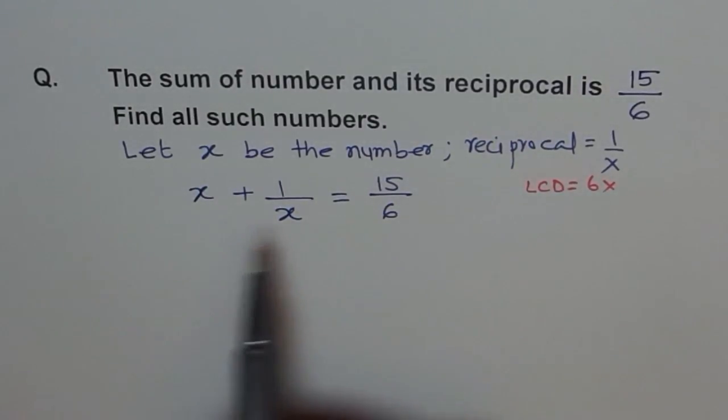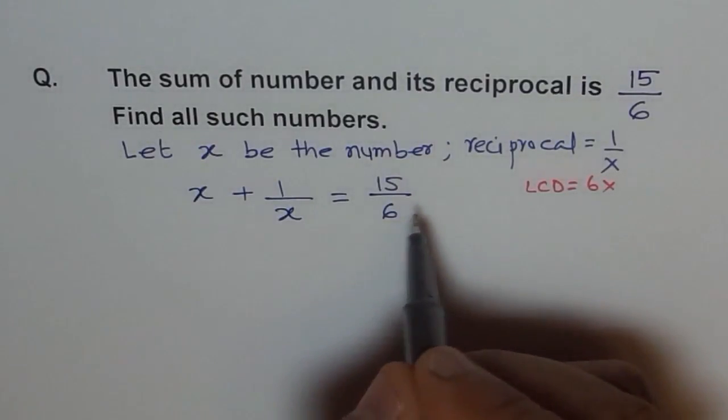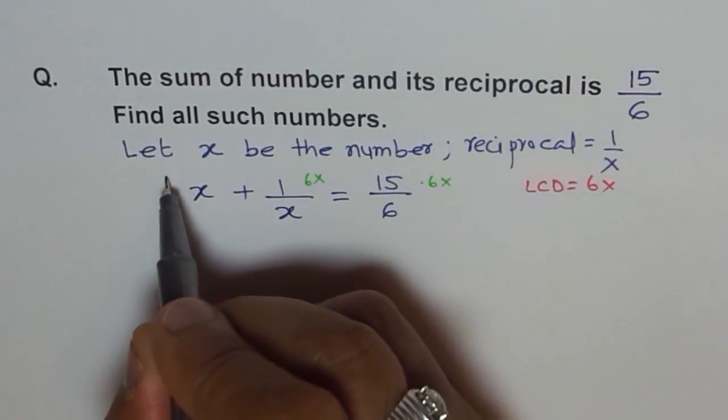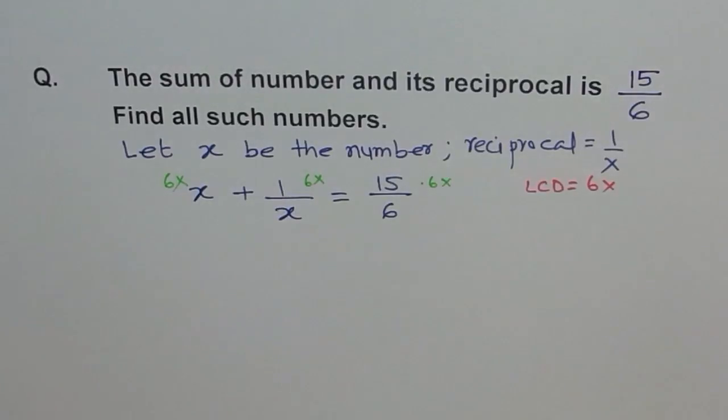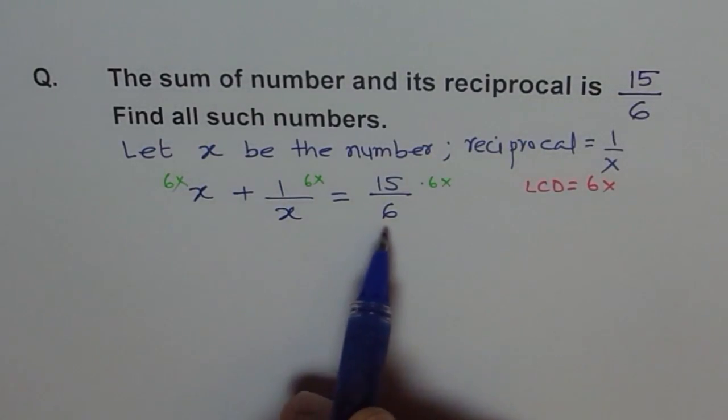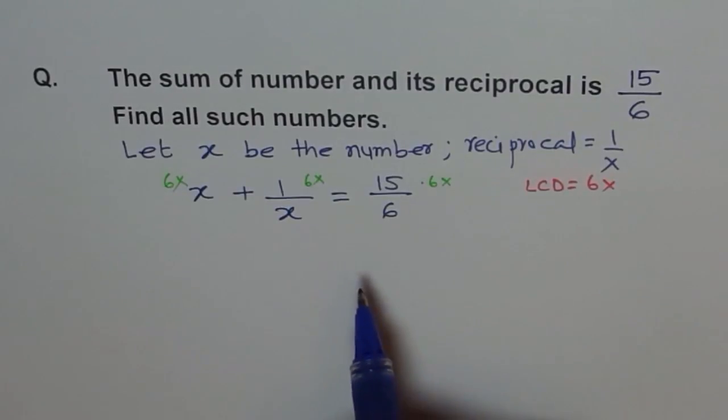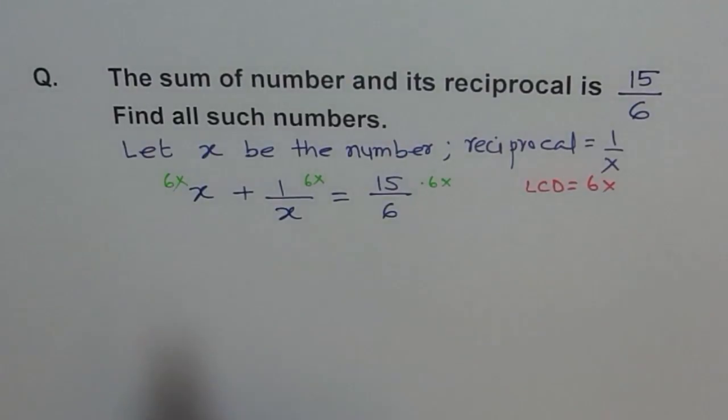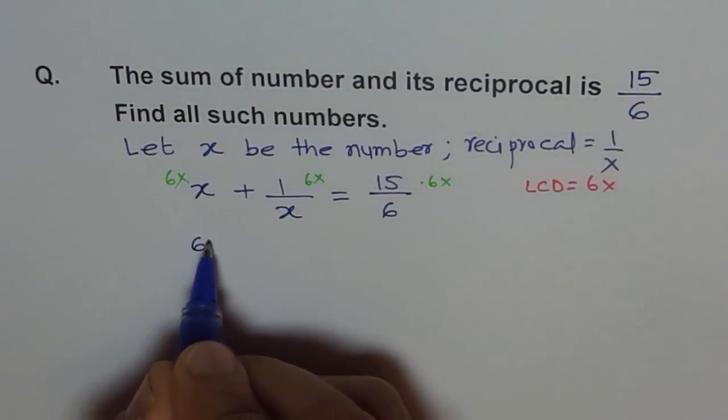So lowest common denominator equals 6x. We will multiply everything by 6x. I am just writing here to show you what we are trying to do. We will times everything by 6x. By doing so, we will actually get rid of the denominator. The fraction part will vanish and it will be easy for us to solve the equation. So if we do that, we get 6x times x is 6x².